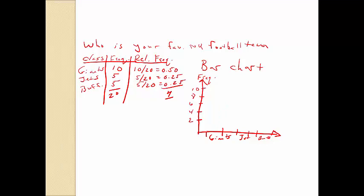Then you draw the bars up to the corresponding count. There were 10 Giants fans, five Jets fans, and five Buffalo fans. You get the idea: we took survey data, computed frequencies, found relative frequencies, and constructed a bar chart.